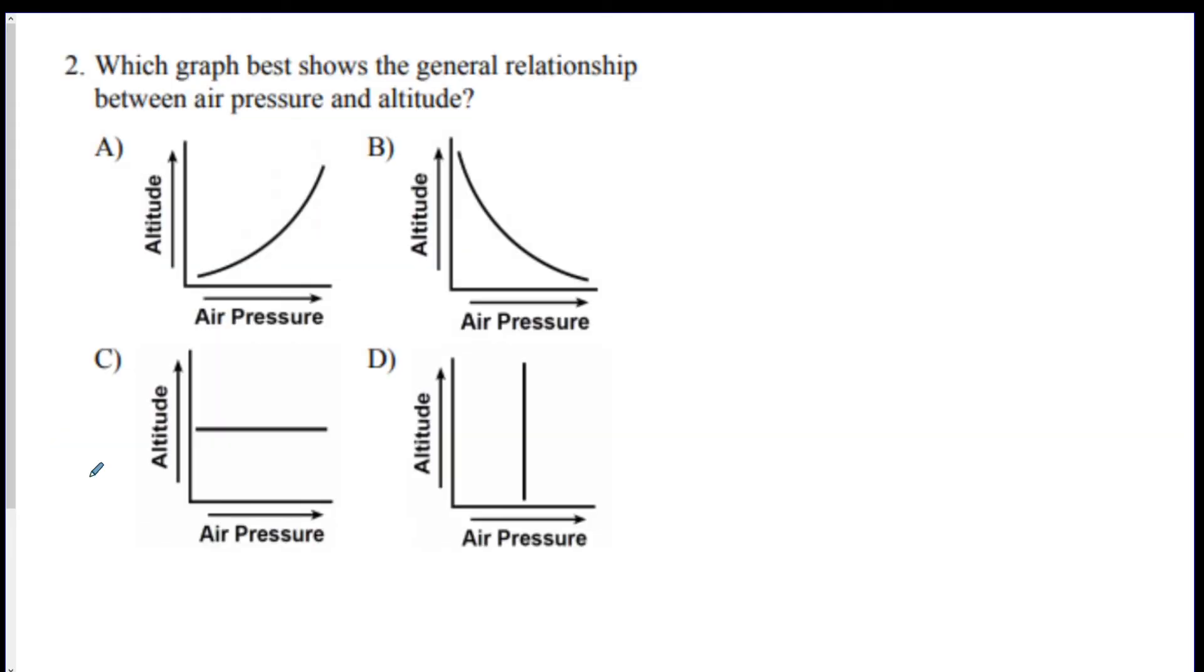Number two. Which graph shows the general relationship between air pressure and altitude? So you want the relationship to be as you increase in altitude, or height, the pressure goes down. This is inverse. B.